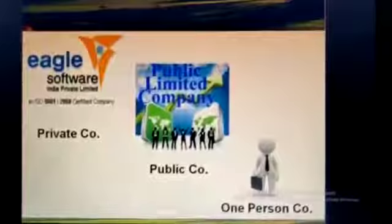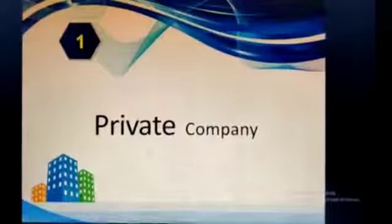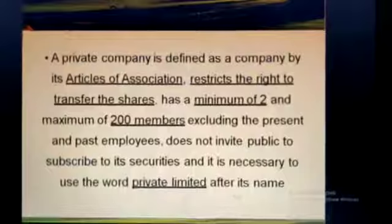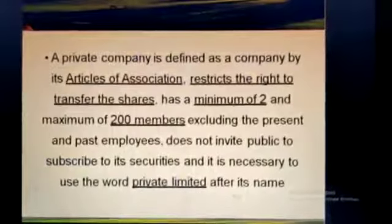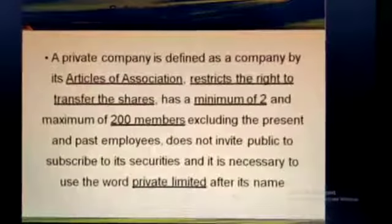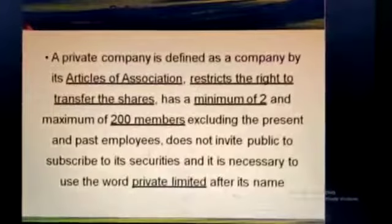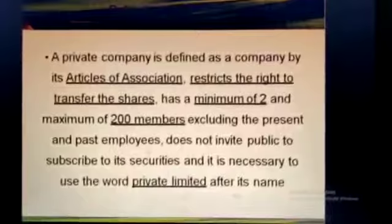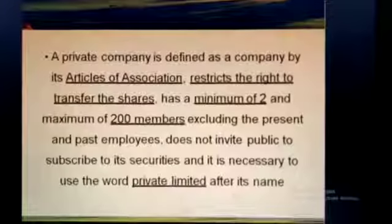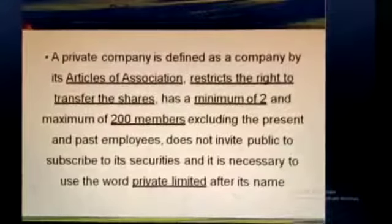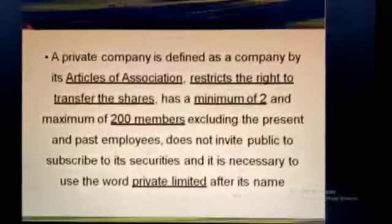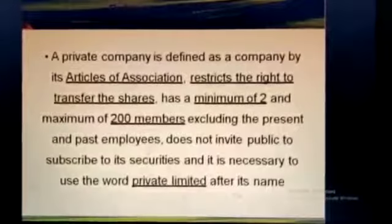On the basis of ownership, a company can be divided into three parts: private company, public company, and one person company. A private company is defined as a company which restricts the right to transfer its shares, has a minimum of 2 and maximum of 200 members including present and past employees, does not invite the public to subscribe to its securities, and it is necessary to use the word 'private limited' after its name.